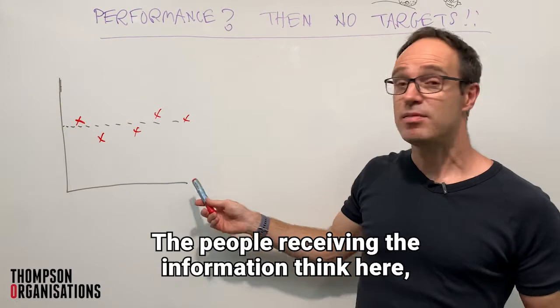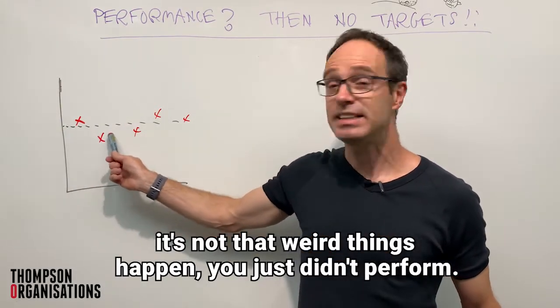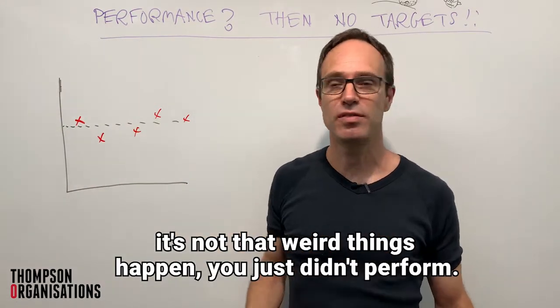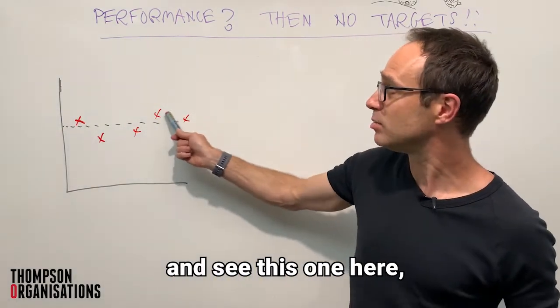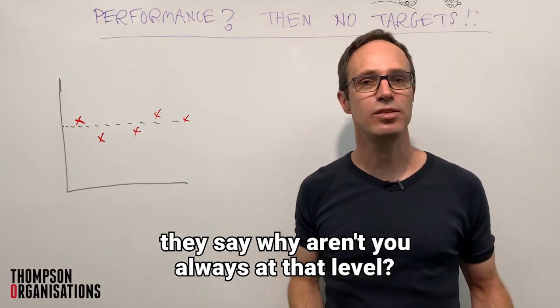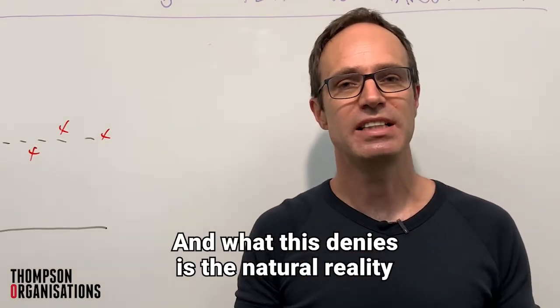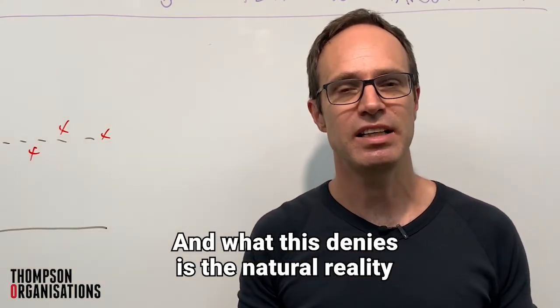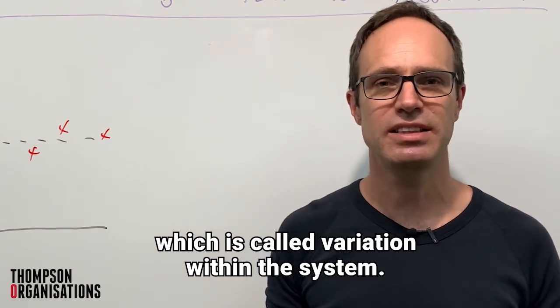The people receiving the information think: it's not that weird things happen, you just didn't perform. And then when they receive the information and see a high result, they say, why aren't you always at that level? What this denies is the natural reality, which is called variation within the system.